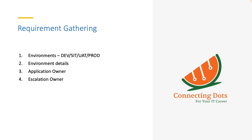In the requirement gathering, first ask the team how many environments they have. Basically, they might have four or five environments maximum for any application: DEV (development environment), SIT (system integration testing), UAT (user acceptance testing), and production. In SailPoint IdentityIQ, you might have three environments: DEV, UAT, and production.